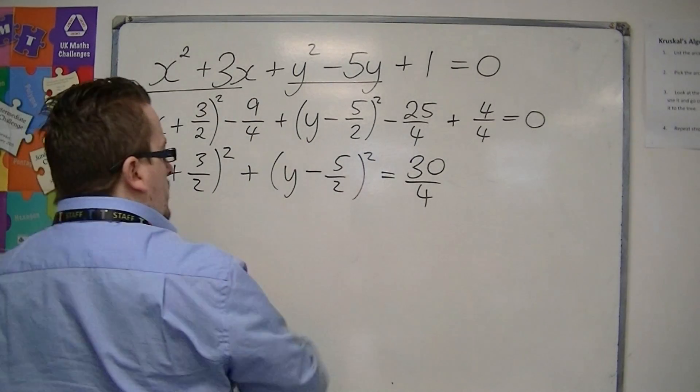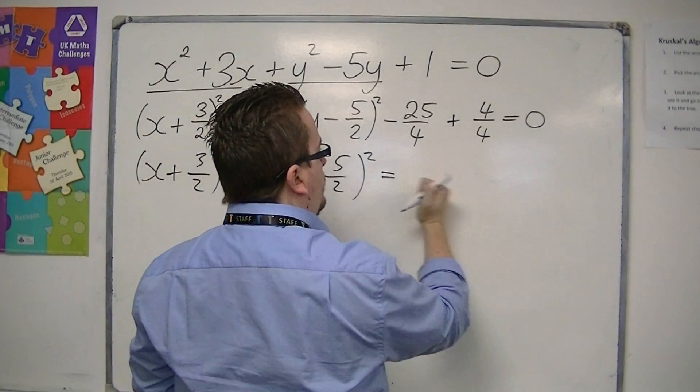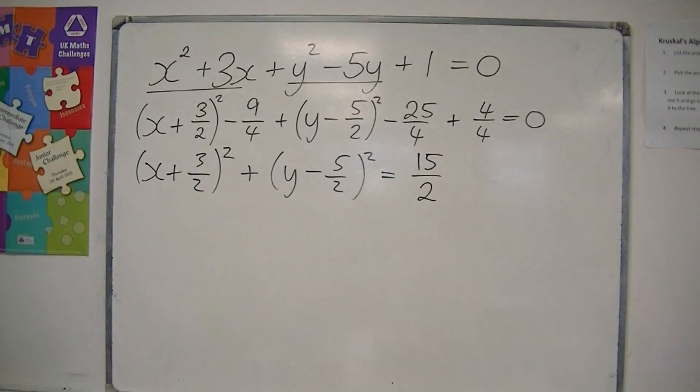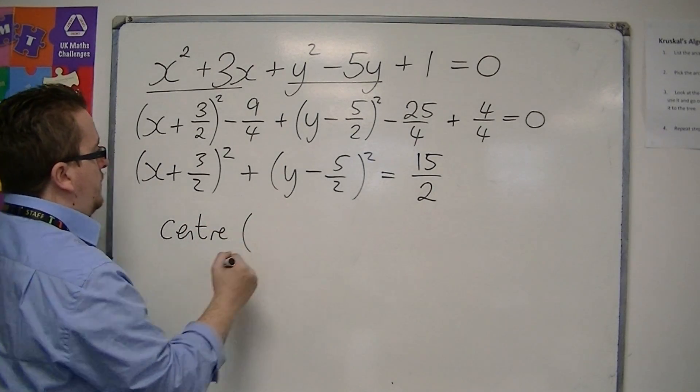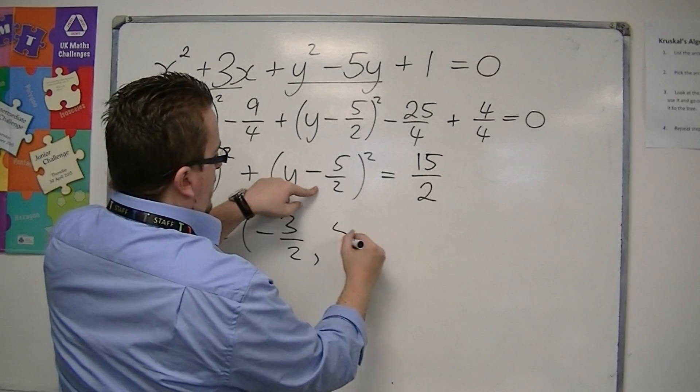Now, 30 over 4, that can be simplified. So 30 over 4 is 15 over 2. So that means that the centre of this circle is at minus 3 halves, 5 halves.